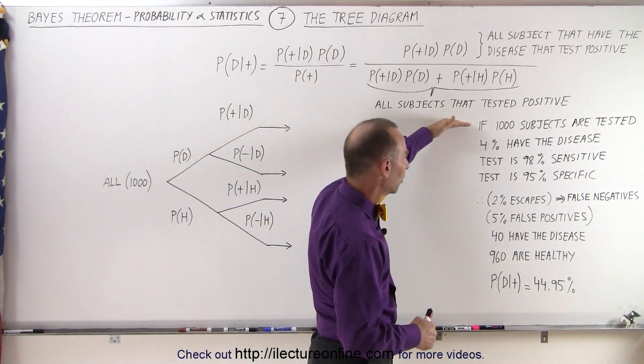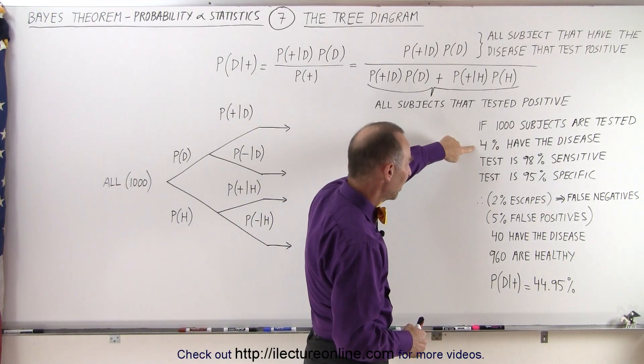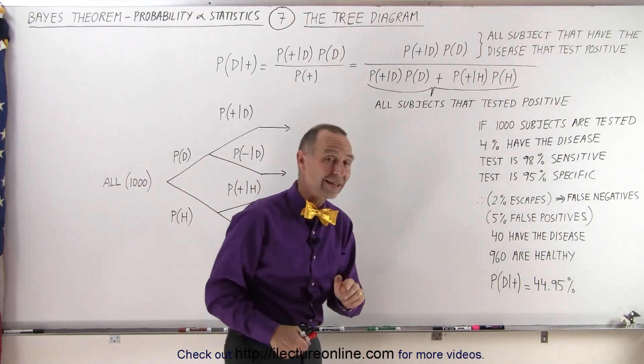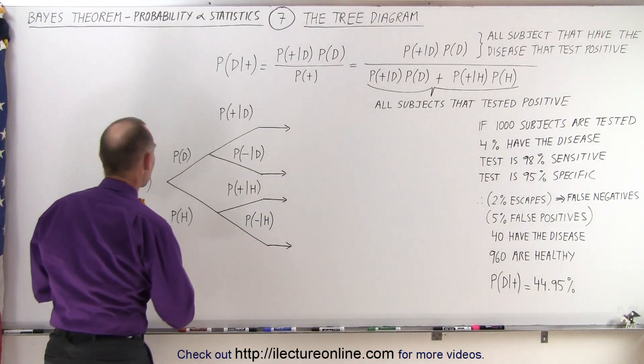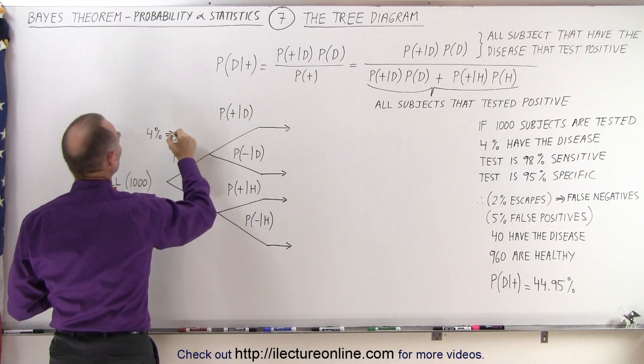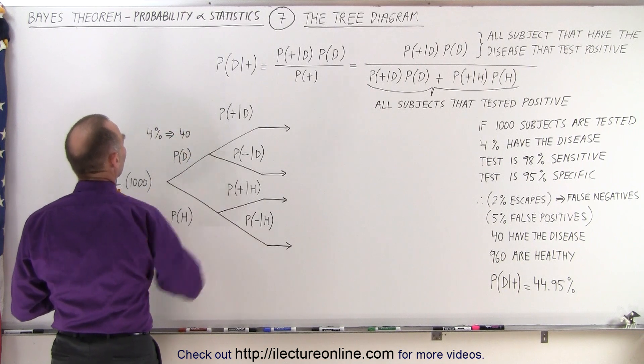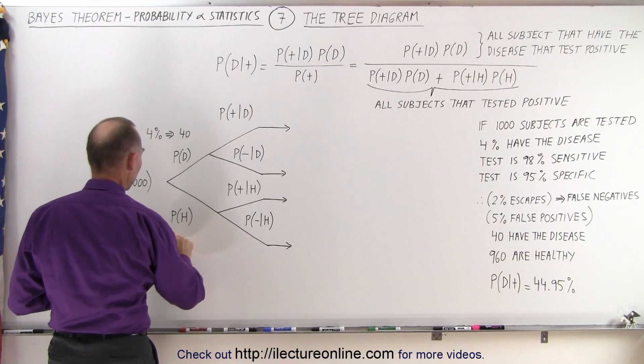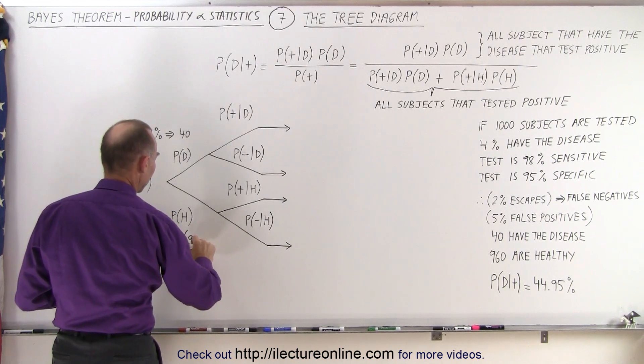Based upon what we're given, out of the thousand subjects, 4% have the disease. That meant 40 have the disease and 960 are healthy. So here we can say that 4% equates to 40 that have the disease. That means 96% are healthy, which equates to 960.